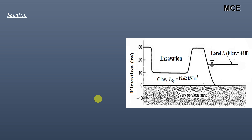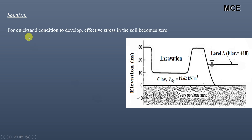For Part A, we know that a quicksand condition develops in the soil when the effective stress in the soil becomes zero. So for the quicksand condition to develop, effective stress should become zero. This means total stress minus pore water pressure should be equal to zero.